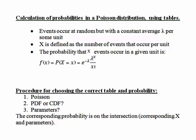Lambda is the parameter when we're looking at a Poisson distribution. We saw previously X is defined as the number of events that occur per unit. While we could calculate probabilities in the Poisson distribution by hand, it is often more convenient and time-saving to use tables.